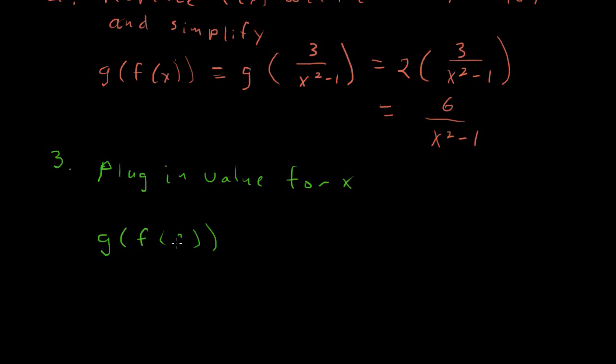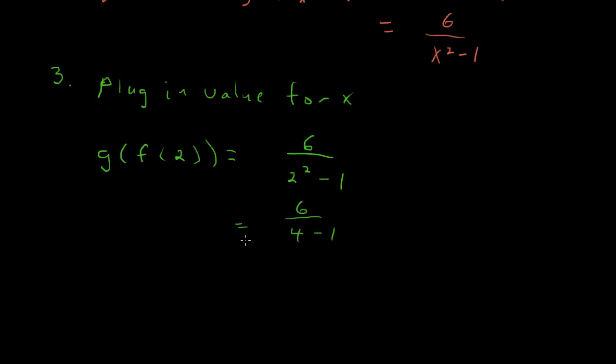So we'll put a 2 here. And then that is equal to, and we'll just look right up here and just replace that x with 2. So we'll have 6 over 2 squared minus 1. And just simplify that out. What is 2 squared? It's 4 minus 1. And keep simplifying. What's 4 minus 1?